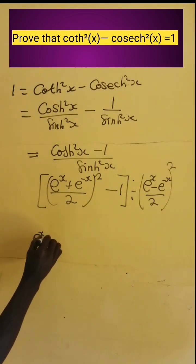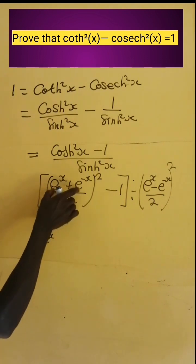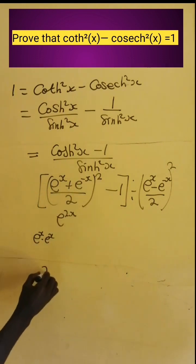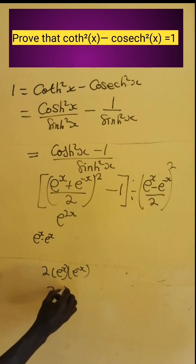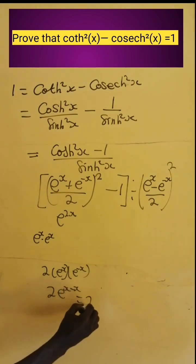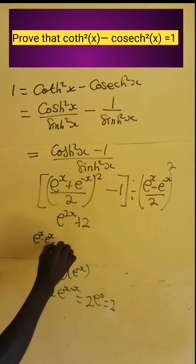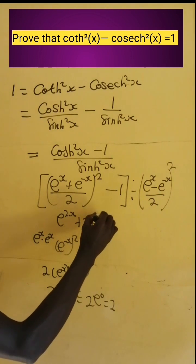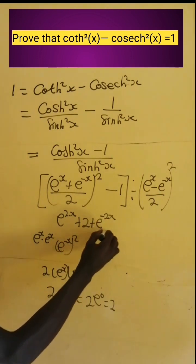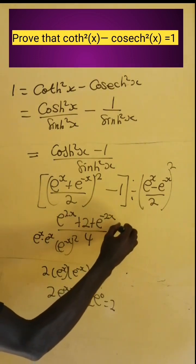We expand: e to the power x squared gives e to the power 2x. Then 2 times e to the power x times e to the power negative x gives 2 times e to the power 0, which equals 2 times 1, which is 2. Then e to the power negative x squared gives e to the power negative 2x. All divided by 2 squared, which is 4. Then we have minus 1.